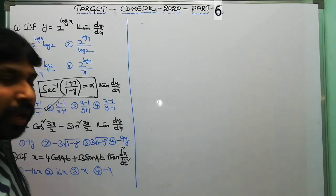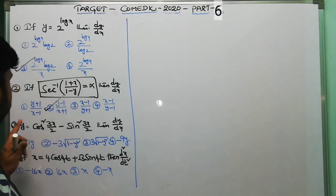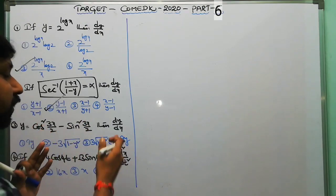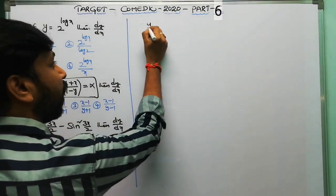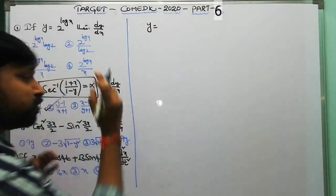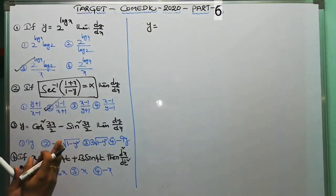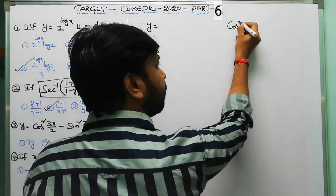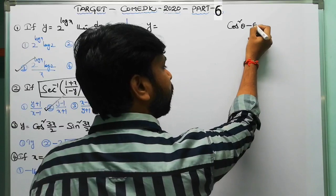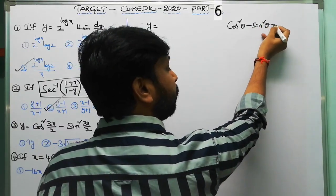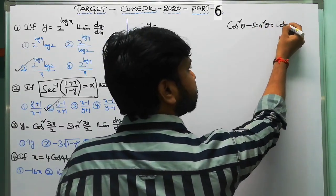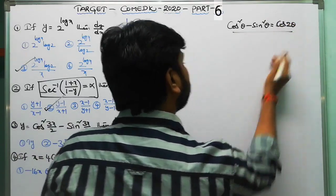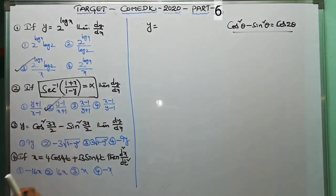Third question: y equals cos²(3x/2) minus sin²(3x/2), find dy/dx. Before applying differentiation, simplify first. Using the trigonometric identity cos²θ − sin²θ equals cos 2θ, so cos²(3x/2) − sin²(3x/2) equals cos(2 · 3x/2) equals cos 3x.